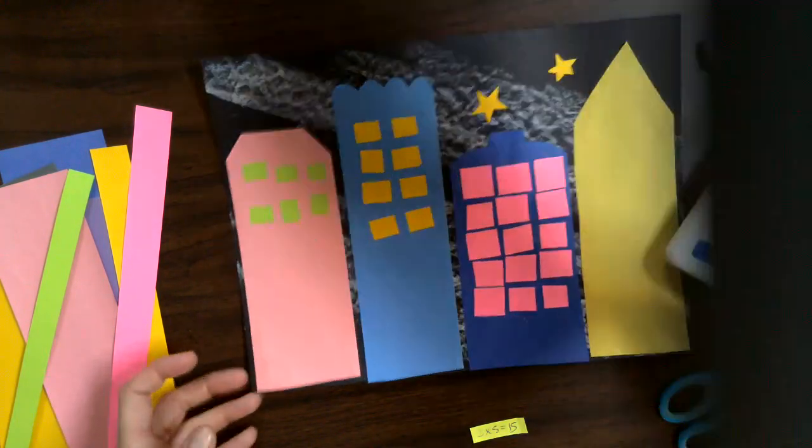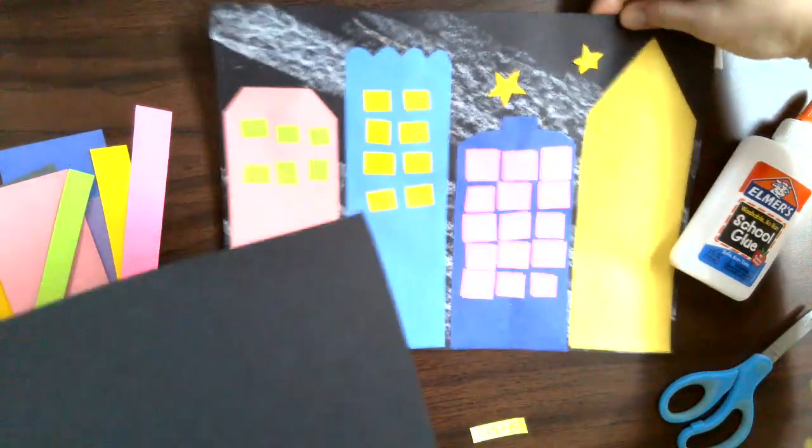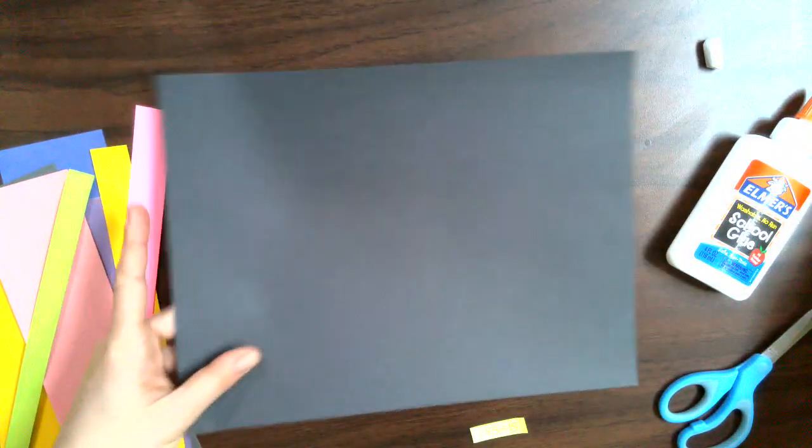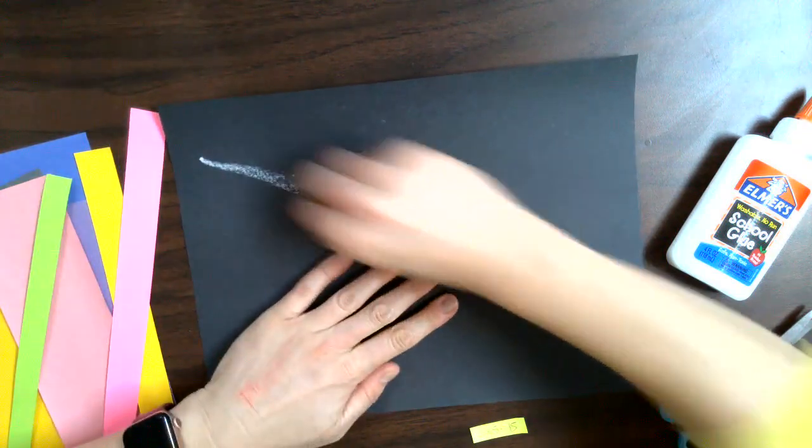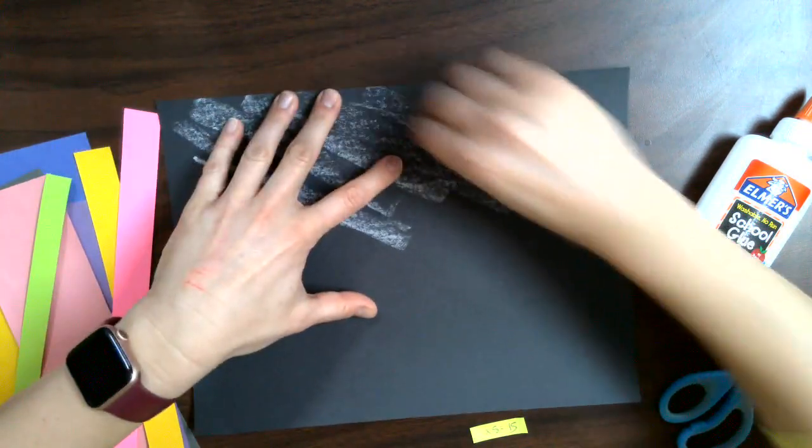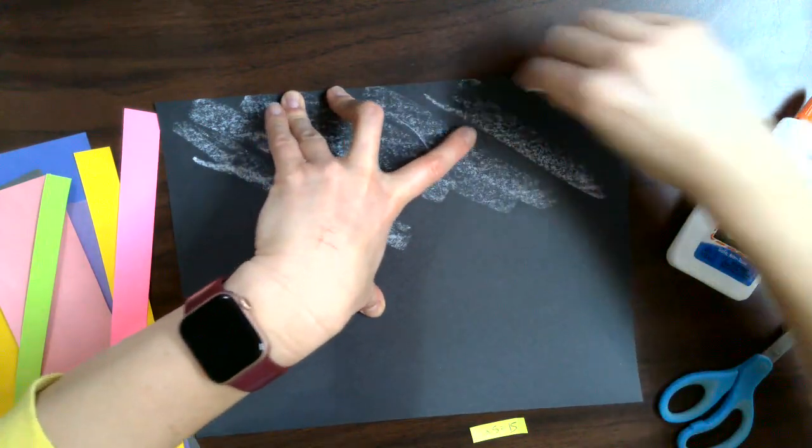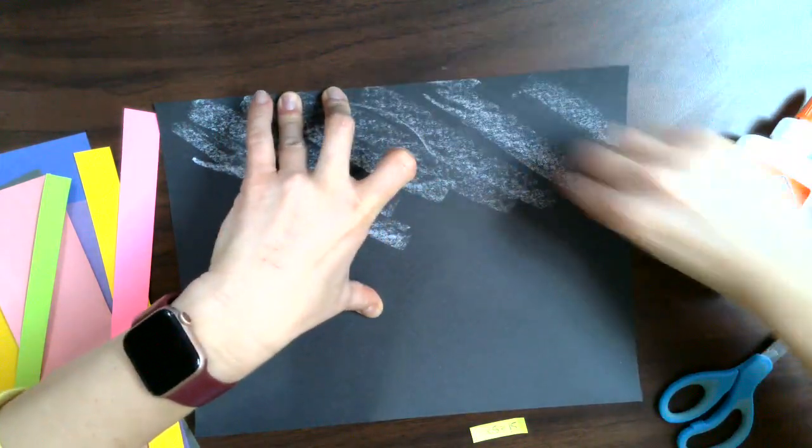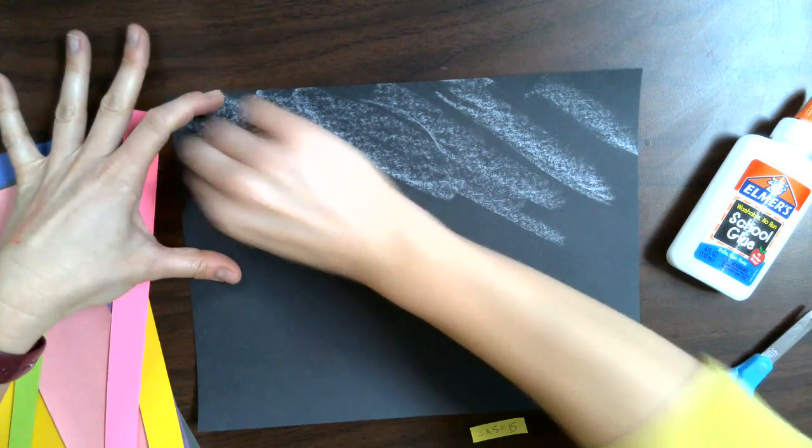I'm going to show you from start. I would use a black piece of paper and the first thing I did was take an oil pastel, you could also use a crayon, and just add a little cloud coverage to the night sky just to make it more interesting.